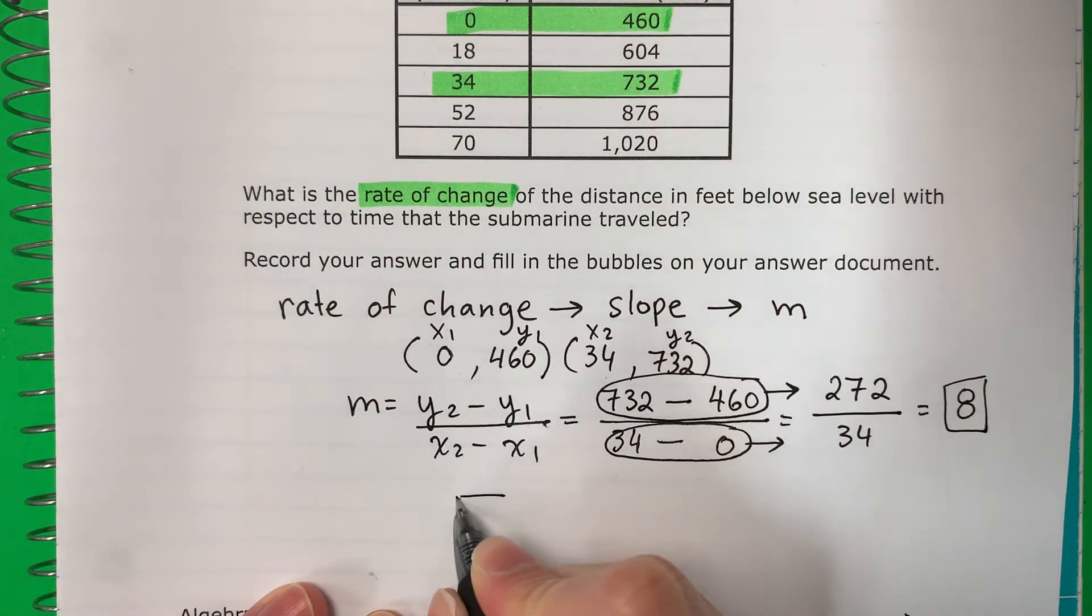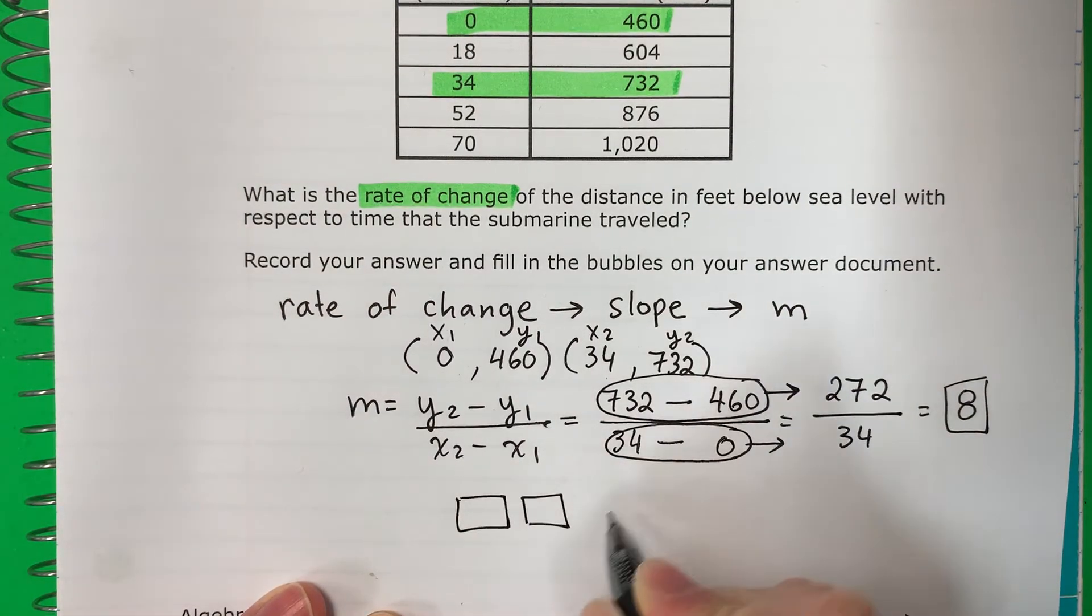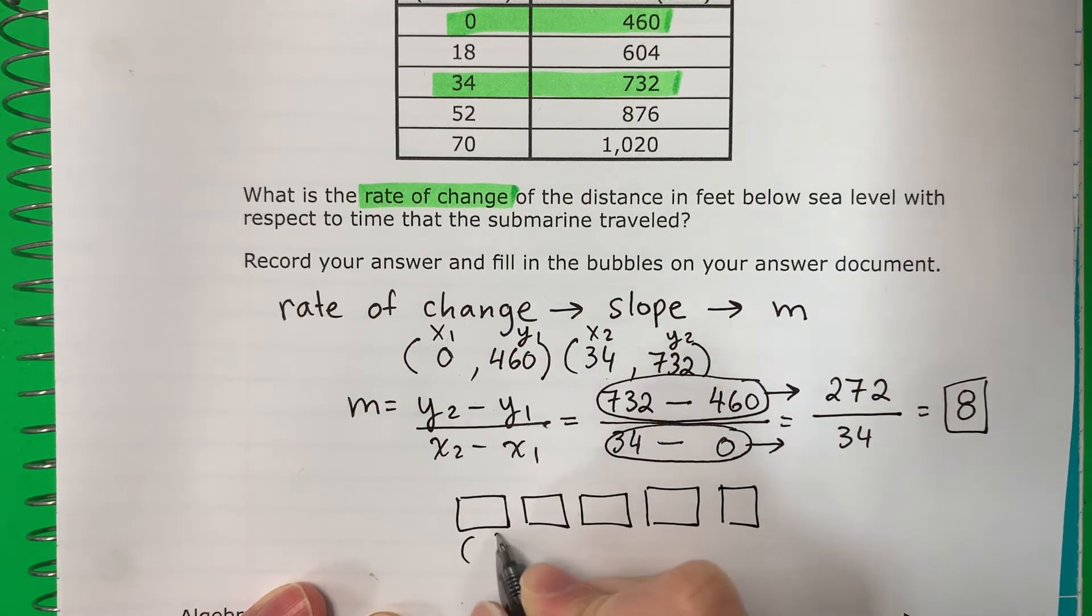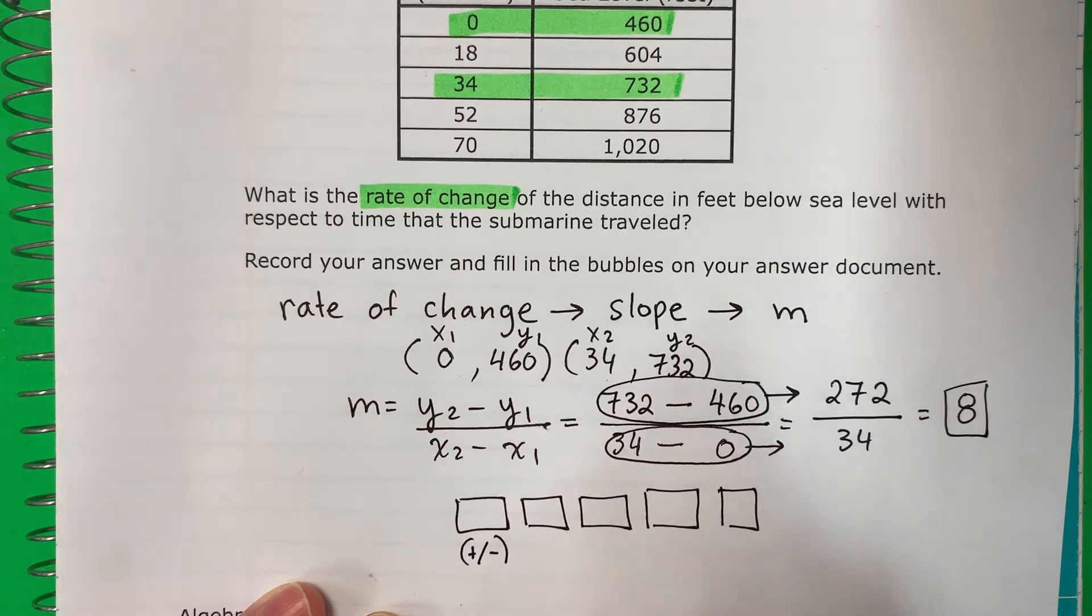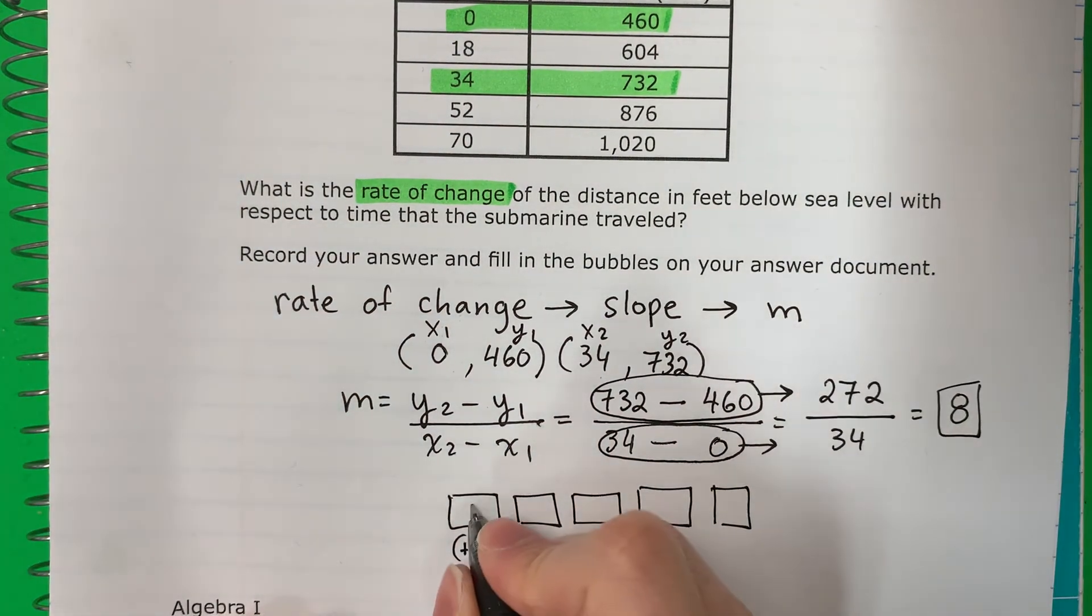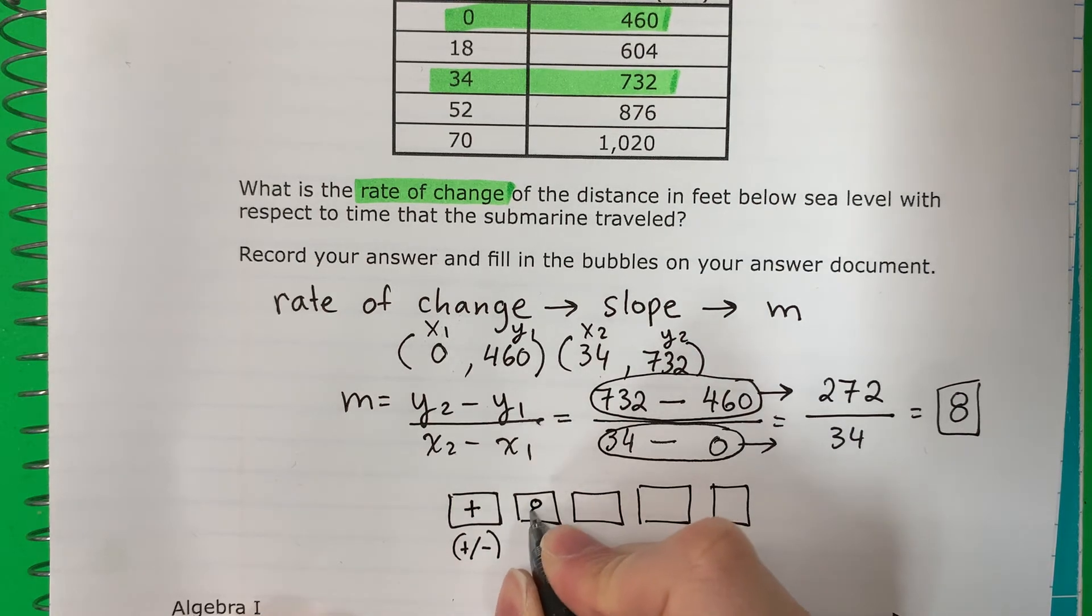Now you might have boxes. Tal vez van a tener cajas. Okay, I don't know how many. No sé cuántos. But the first box, la primera caja, is positive or negative. Es positivo o negativo. This is positive, positive, and then you put 8.